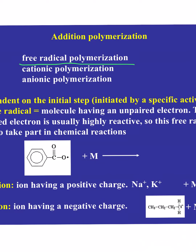We have other techniques that are similar but involve ions rather than free radicals — very charged species that can also react with other monomers and start to form polymer chains. This whole process is dependent on the initial step, which is initiated by a specific active species. Those double bonds don't just react because they're bored — they have to be kicked into that process to make this free radical, giving us a molecule having an unpaired electron, which is highly reactive.